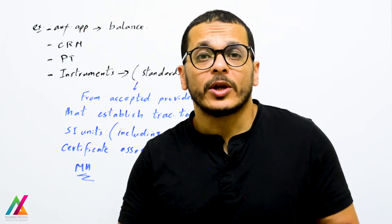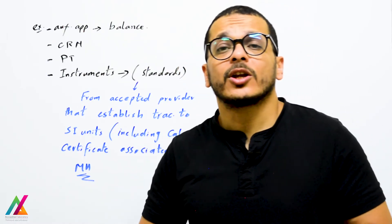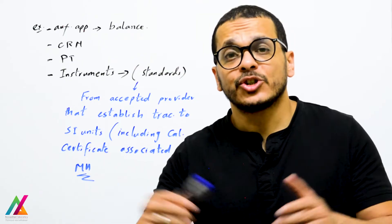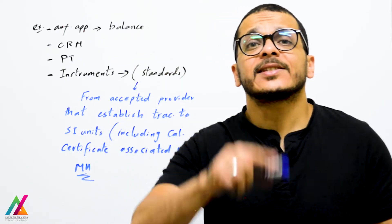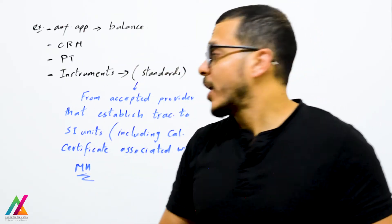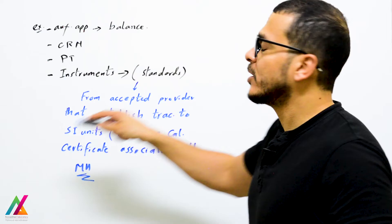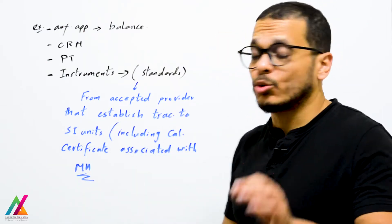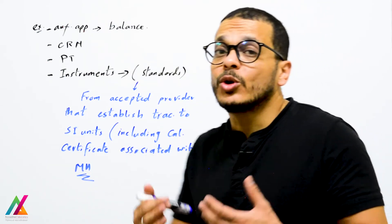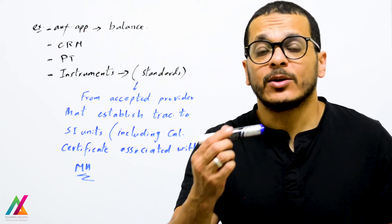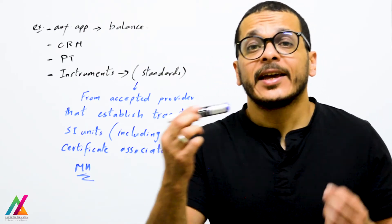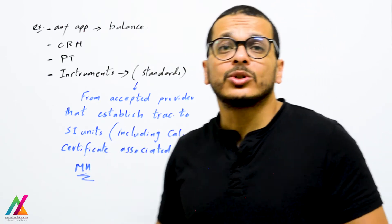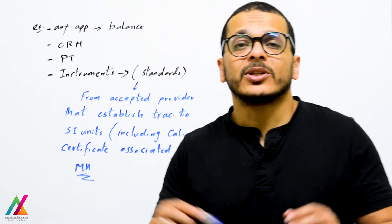For measuring instruments inside the lab, each instrument shall be calibrated by measurement standards, and those standards shall be from an accepted provider that establishes traceability to SI units. They will provide a calibration certificate, and these certificates include the measurement uncertainty.